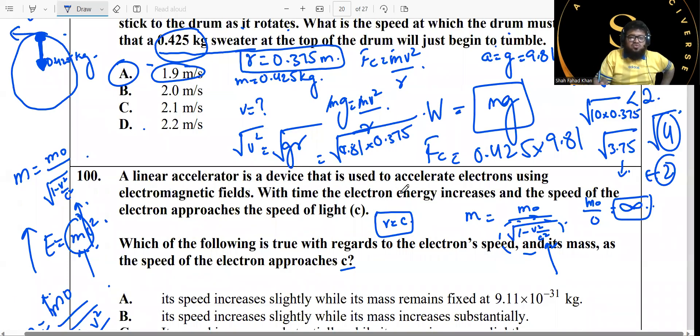Last but not the least: a linear accelerator is a device that is used to accelerate electrons using electromagnetic fields. With time, the electron energy increases and the speed of the electron approaches the speed of light. Now you guys know what's happening here, right? We are moving at the speed of light, so all the concepts of this theory of relativity should start jumping into your minds. We had three major concepts, the three key concepts of theory of relativity: mass variation, time dilation, and length contraction.